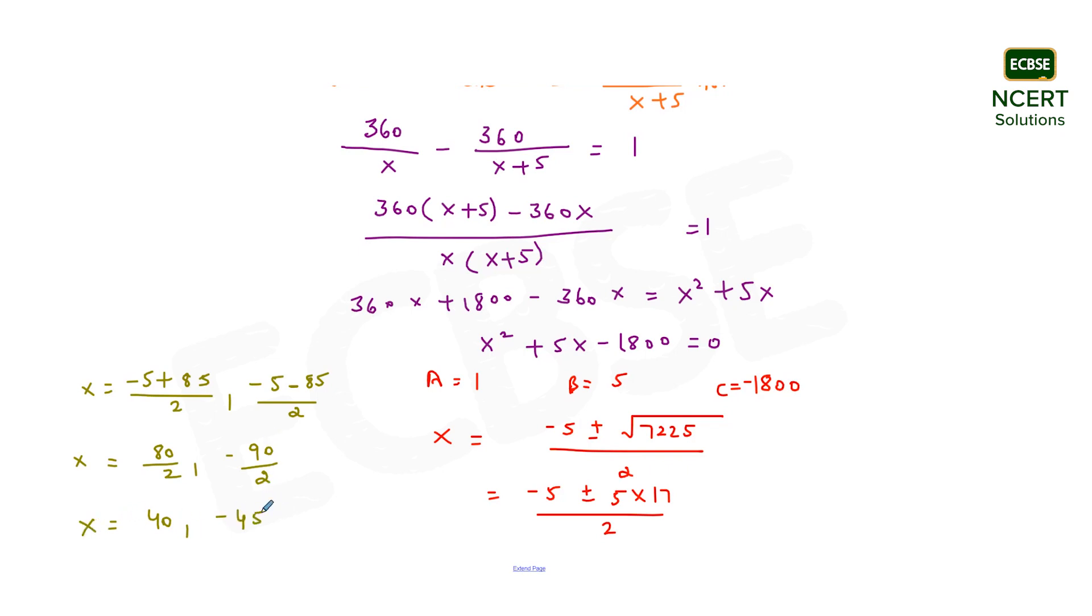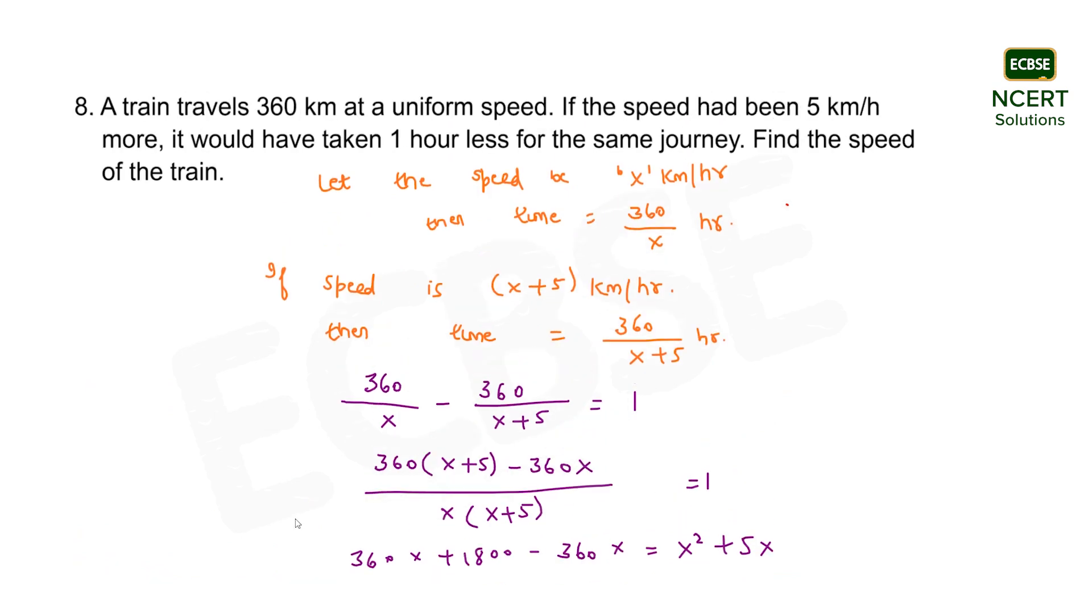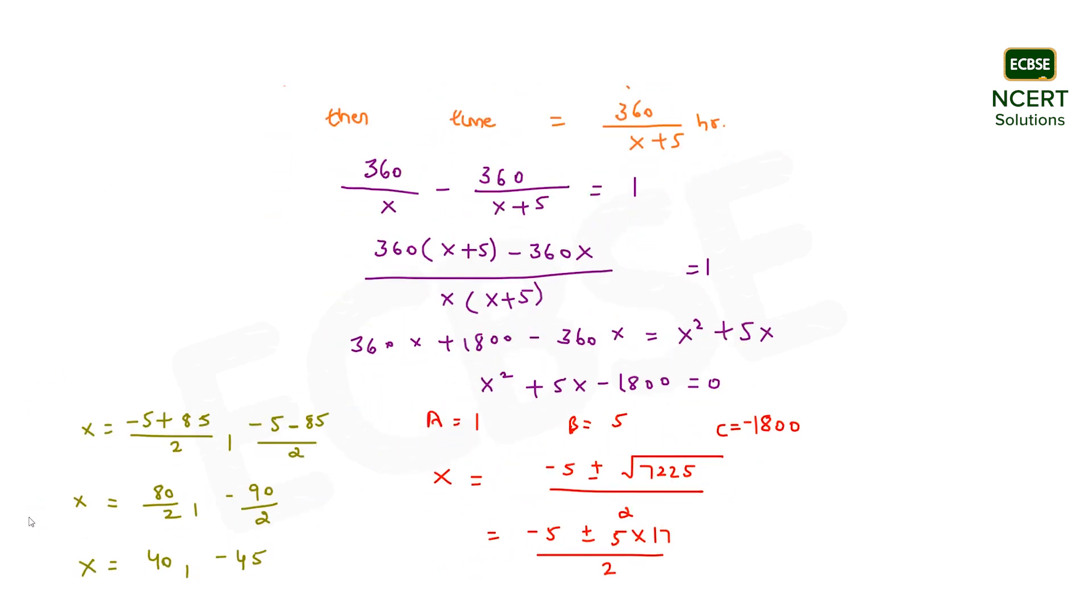So the speed of the train is either 40 km per hour or minus 45 km per hour. But we know the speed can only be a positive quantity, so the root here will definitely be 40 km per hour.